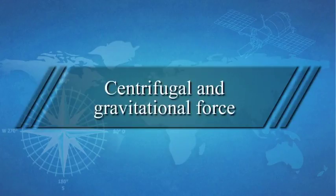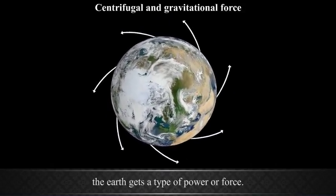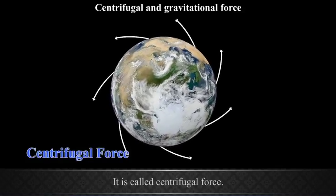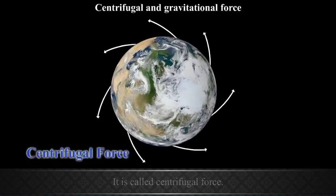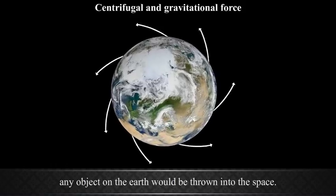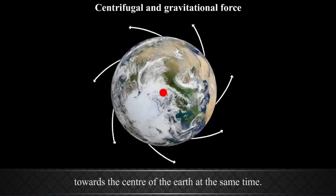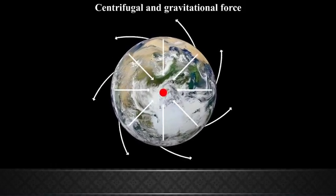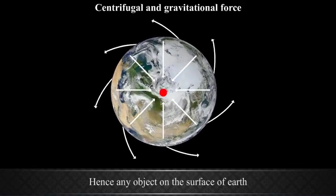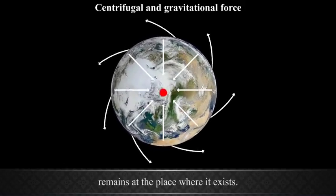Centrifugal and Gravitational Force. Due to its rotation, the Earth gets a type of power or force. This force works away from the center and is called centrifugal force. Due to this force, any object on the Earth would be thrown into space. However, the gravitational force works towards the center of the Earth at the same time, and is many times greater than the centrifugal force. Hence, any object on the surface of the Earth remains at the place where it exists.